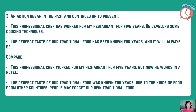Compared to simple past: 'This professional chef worked for my restaurant for five years, but now he works in a hotel.' So the duration was five years — for example from 2014 to 2019 — but now it is 2020 and he no longer works for me. Another example: 'The perfect taste of our traditional food has been known for years, and it will always be' — there is hope that the taste of traditional food will always remain like that into the future.